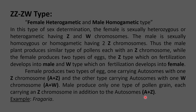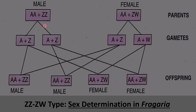The example of ZZ/ZW sex determination is Fragaria, the wild strawberry plant. The male is homogametic, producing only one type of pollen, while the female is heterogametic, producing two different types of eggs with Z and W chromosomes. When the Z-type egg is fertilized, a male is formed; when the W-type egg is fertilized, a female progeny is formed.